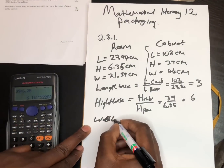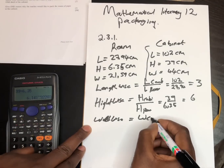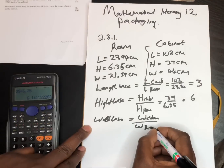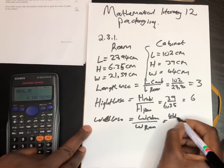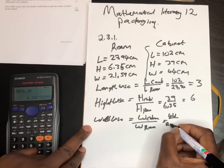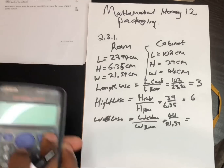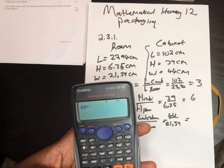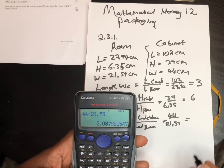The last dimension is width: the width of the cabinet divided by the width of a ream — 44 divided by 21.59. The answer is 2, so we can fit 2 reams along the width.